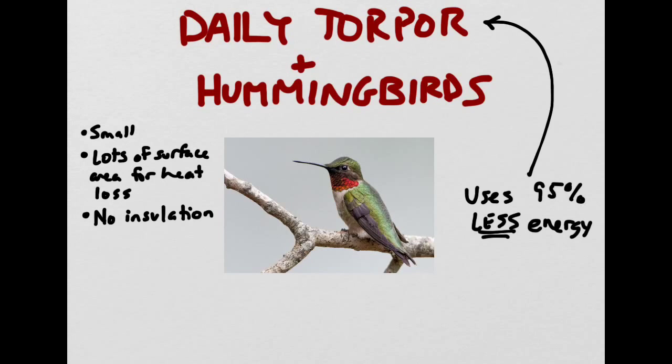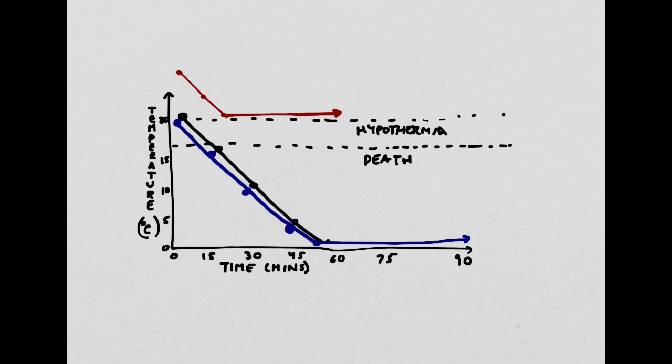Torpor is a state that uses about 95% less energy than normal. The hummingbird achieves this by hovering its body temperature just above the threshold for hypothermia. As you can see with this graph, instead of going into hypothermia and eventually dying, the hummingbird hovers just above the set point for hypothermia.